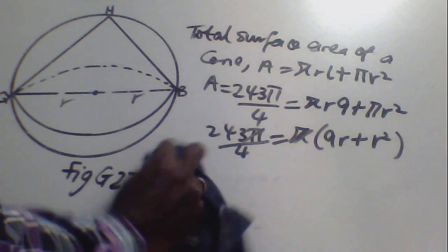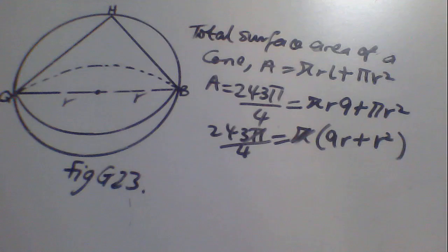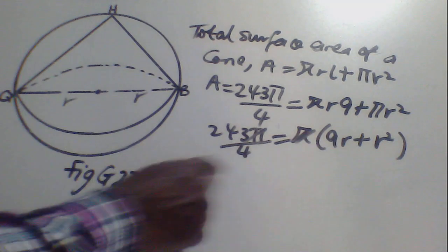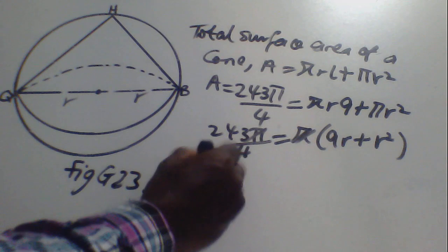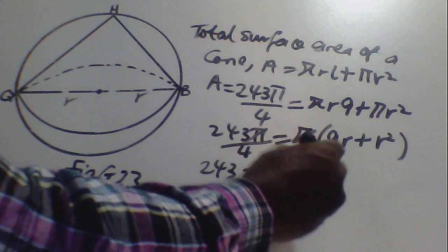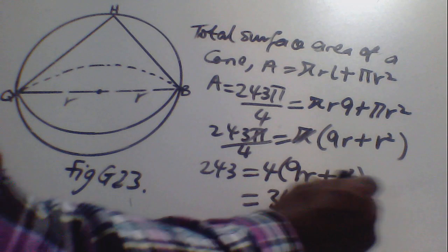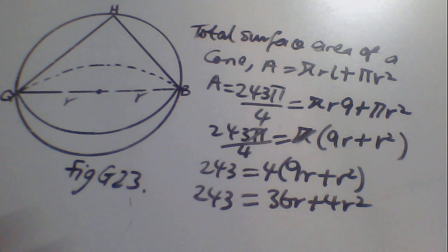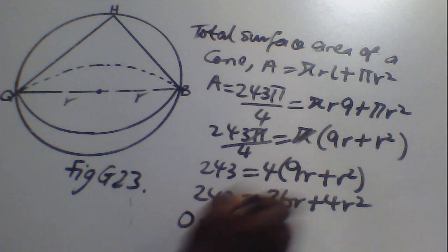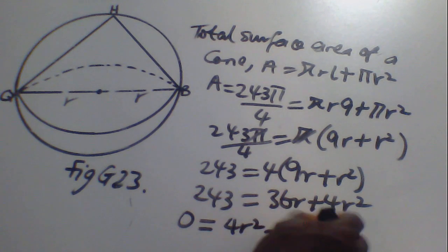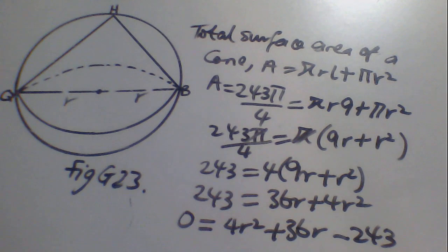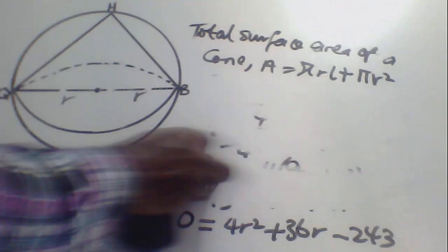Now we rearrange the equation. Cross-multiplying gives 243 equals 4(9R + R²), which expands to 36R plus 4R² equals 243. Rearranging: 4R² plus 36R minus 243 equals 0.